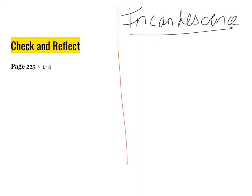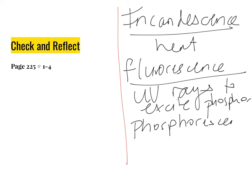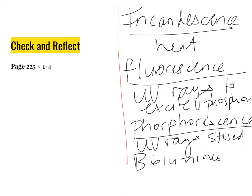So now that we've done the lesson, what you need to do is you need to go through the check and reflect on page 225, and you need to do questions number one through four. Remember, we've now looked at four different ways of producing light. Incandescence, which is where we use heat. Fluorescence, where we use electricity and UV rays to excite the phosphor to glow. We have phosphorescence, where UV rays are stored, or the energy is stored and then given off later. And bioluminescence, where it's living organisms that are giving off light.